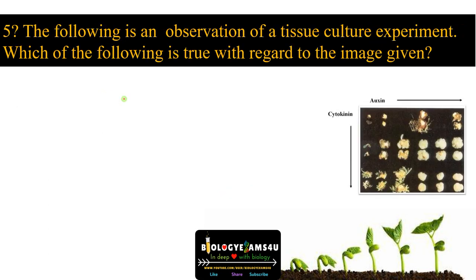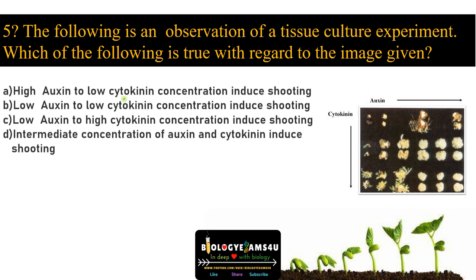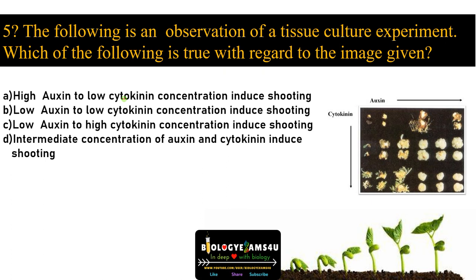Question number five: the following is an observation of a tissue culture experiment. Which of the following is true regarding the image? Options: A high auxin to low cytokinin concentration induces shooting, B low auxin to low cytokinin concentration induces shooting, C low auxin to high cytokinin concentration induces shooting, D intermediate concentration of auxin and cytokinin induces shooting.